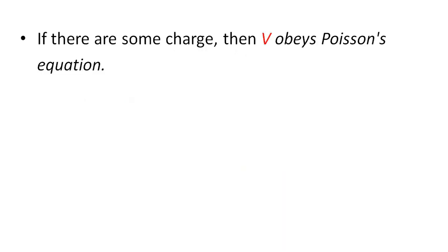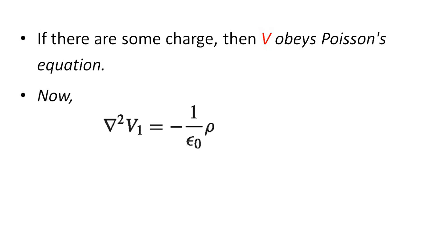If there are some charges, then the potential V obeys the Poisson equation. If we have charge, we will have the Poisson equation. The equations will be: del squared V1 equal to minus 1 over epsilon-zero times rho, and del squared V2 equal to minus 1 over epsilon-zero times rho.